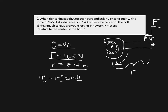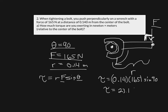Torque equals R times F times sine of the angle. The radius is 0.14, the force is 165, and the sine of 90 degrees. Plugging all these numbers in gives a torque equal to 23.1 Newton-meters. That's a basic torque problem, but we can get fancier by working with statics.